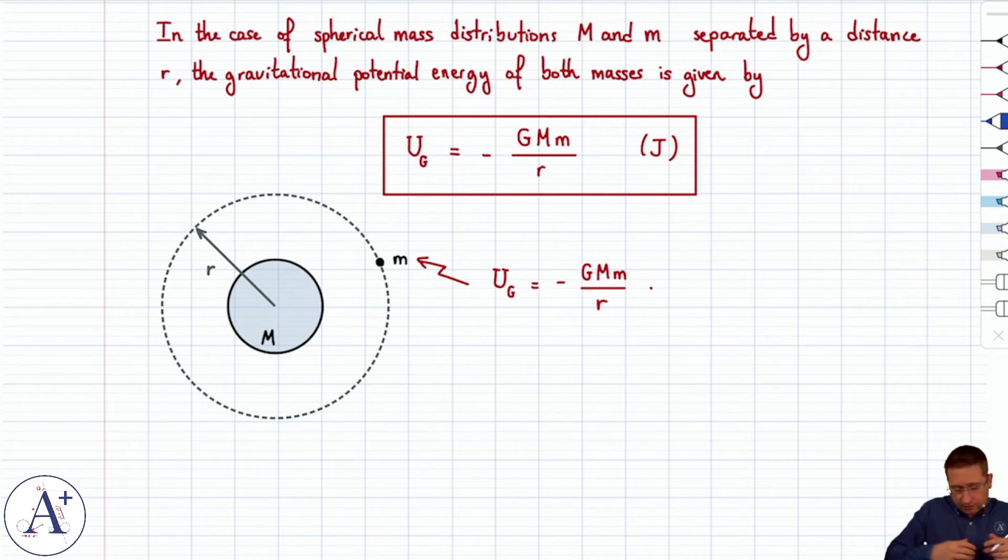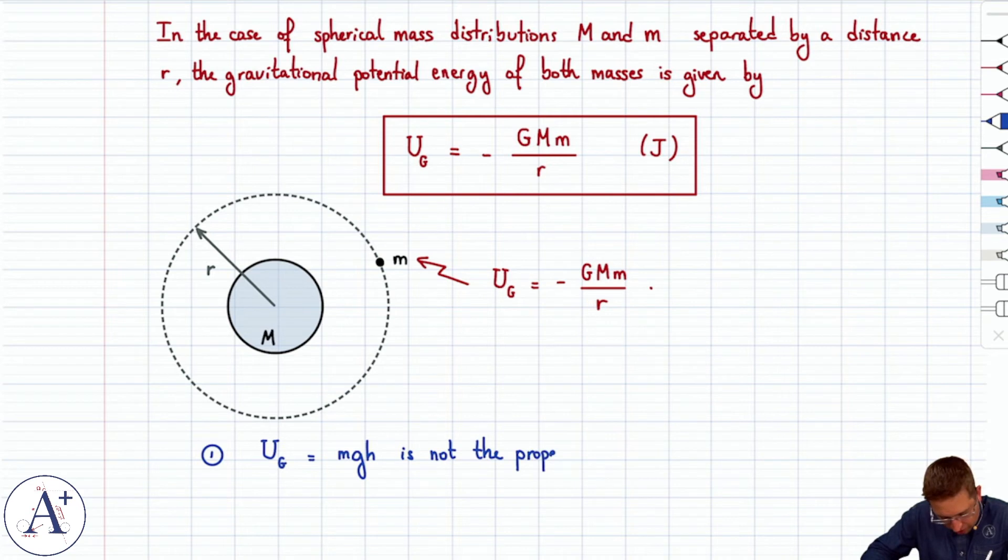Well here we don't get to do that. So there's two things to keep in mind in this particular case. First one is that U g equals MGH is not the proper potential energy or gravitational potential energy.